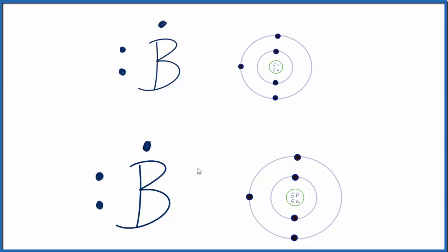Think of it this way. Electrons are negative. When you lose a negative, you become more positive. So boron, B3+, has lost three electrons.